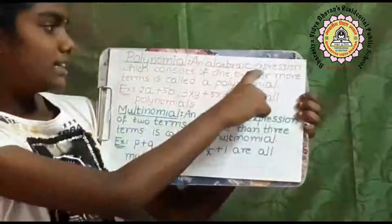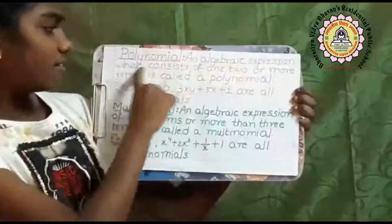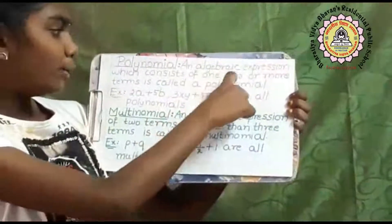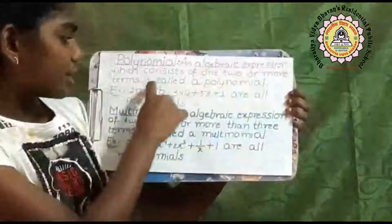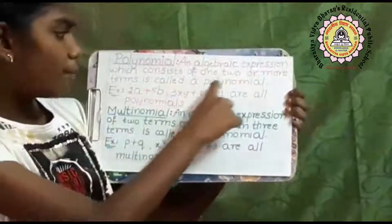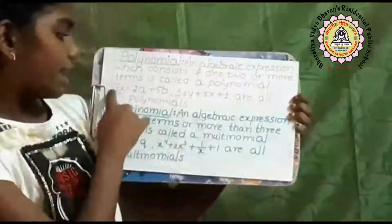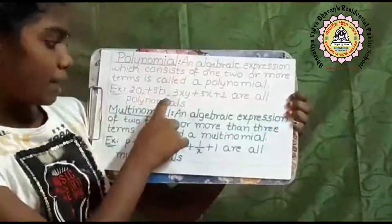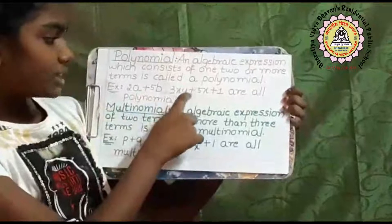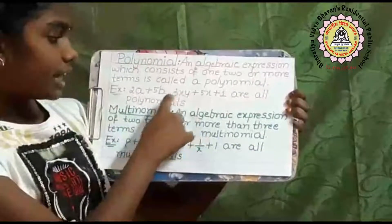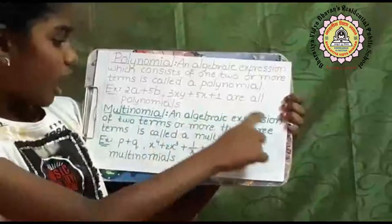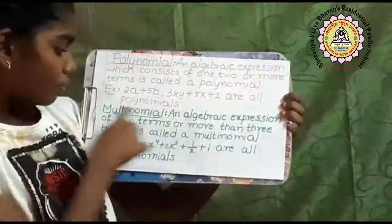Polynomial: an algebraic expression which consists of one, two or more terms is called a polynomial. Example: 2a plus 5b, 5x plus 1 are all polynomials.